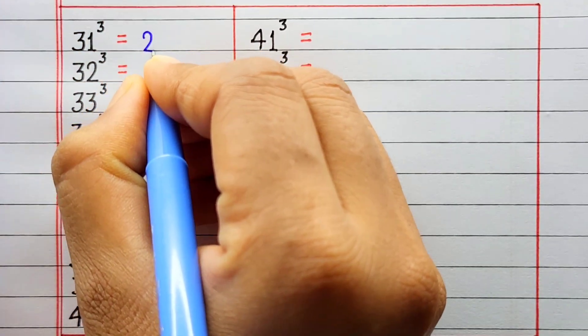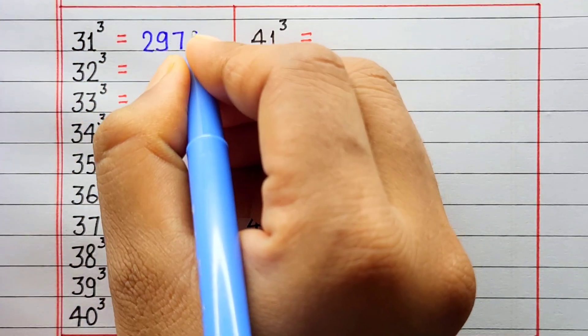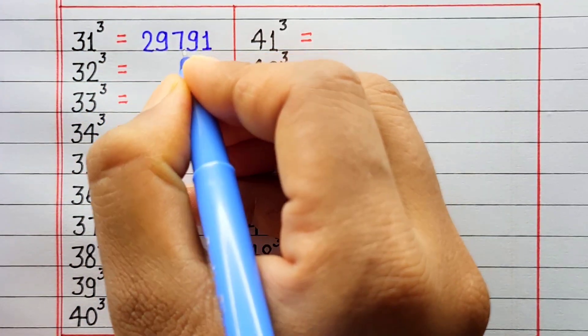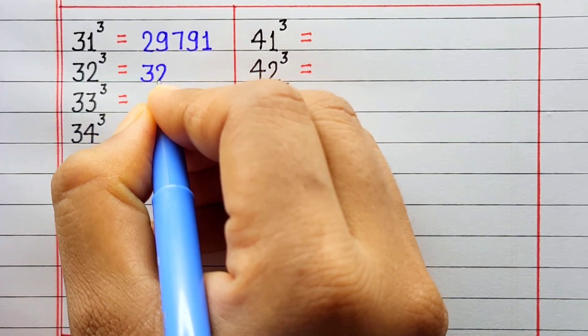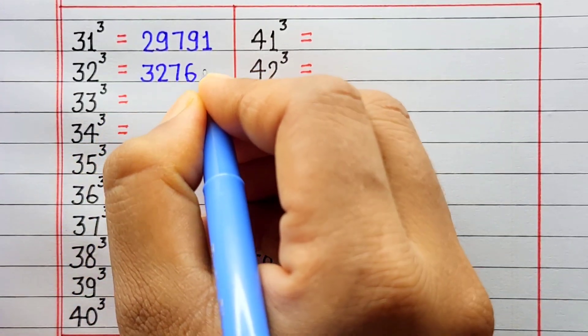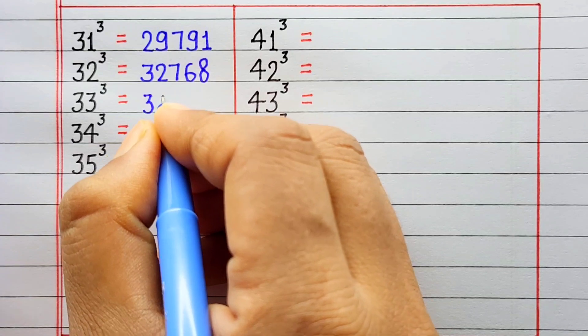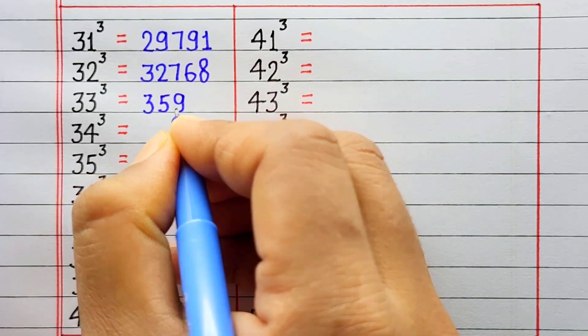Cube of 31 is 29791. Cube of 32 is 32768. Cube of 33 is 35937.